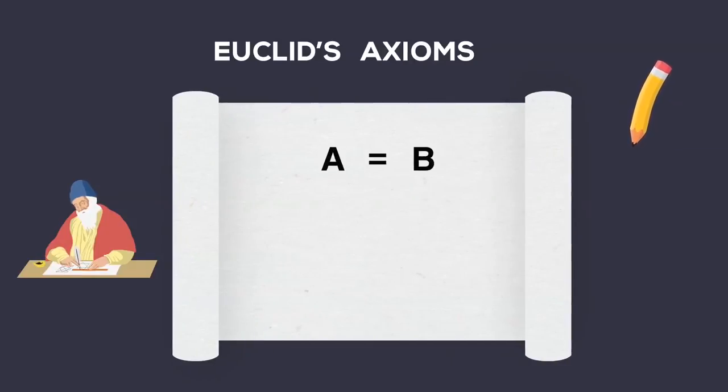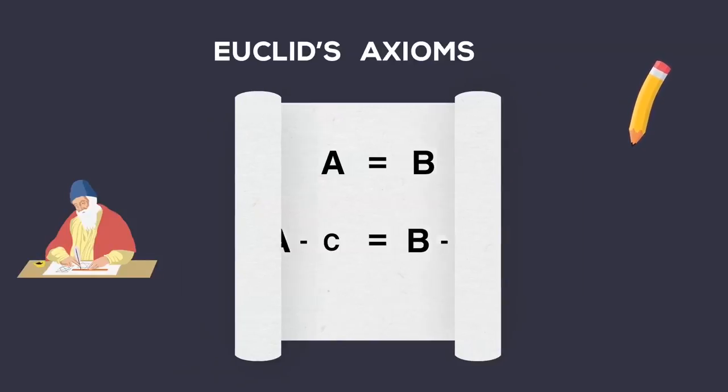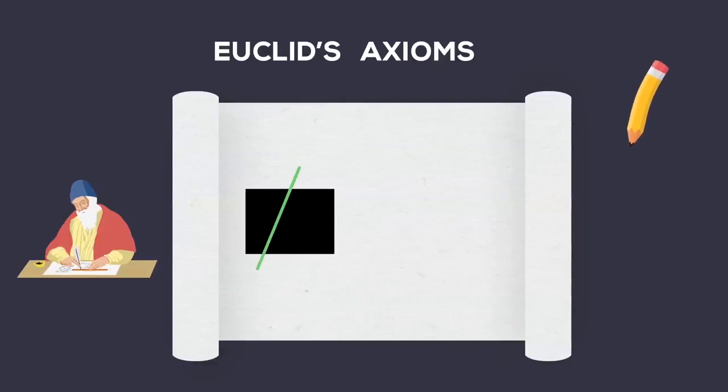3. If equals are subtracted from equals, then the remainders are equal. 4. Things which coincide with one another are equal to one another. 5. The whole is greater than the part.